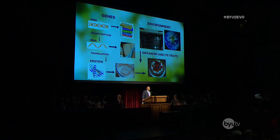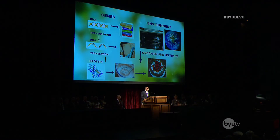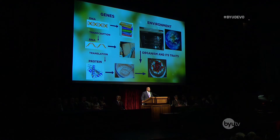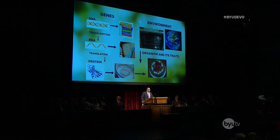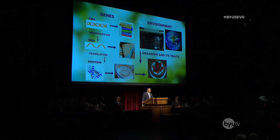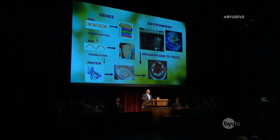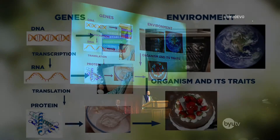DNA, the original recipe, is transcribed into RNA while remaining in a protected location. The RNA, the photocopied recipe, is then used outside of that protected area to assemble each component of a protein in the right order and combination, which would be the batter. Finally, the environment — which could range from the other proteins in the cell to the personal relationships you have to the air that you breathe — influences the final result.